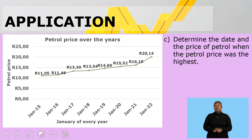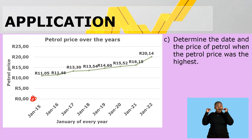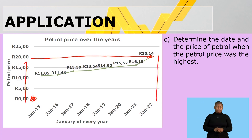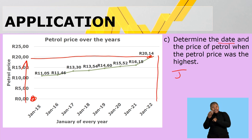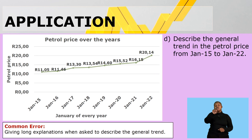Determine the date and the price of petrol when the petrol price was at its highest. Remember, the highest is the furthest away from zero, and you can see it going up on the graph. The highest point is January 2022 and the price was 20 rand 14 cents.